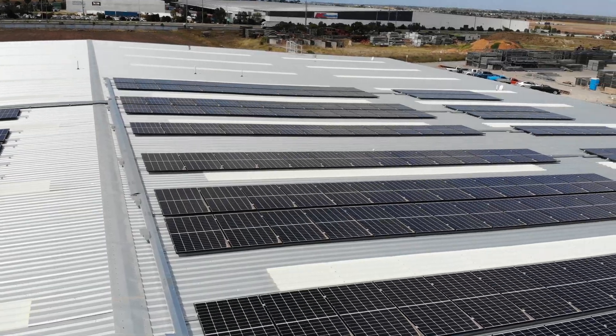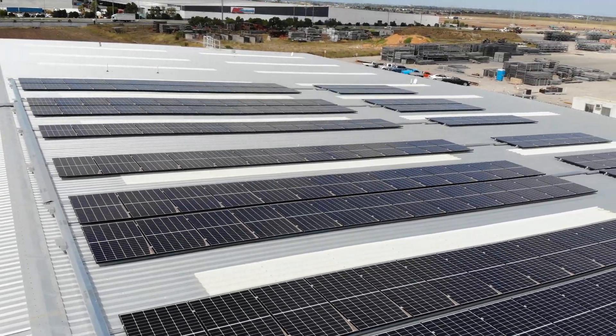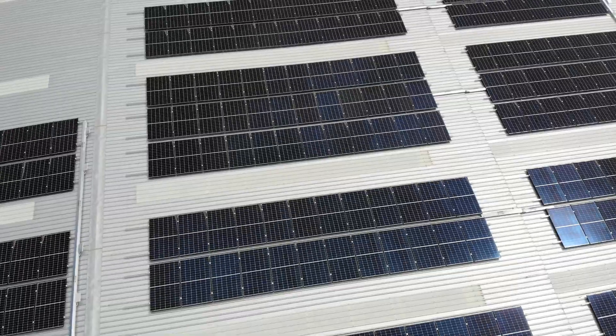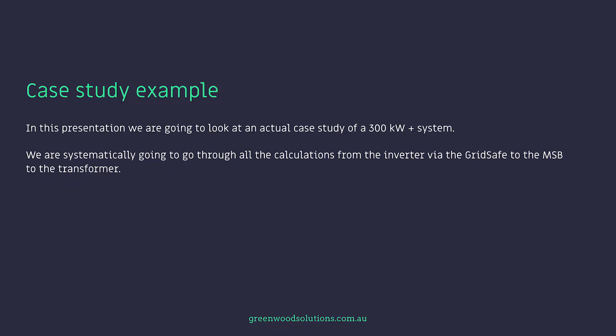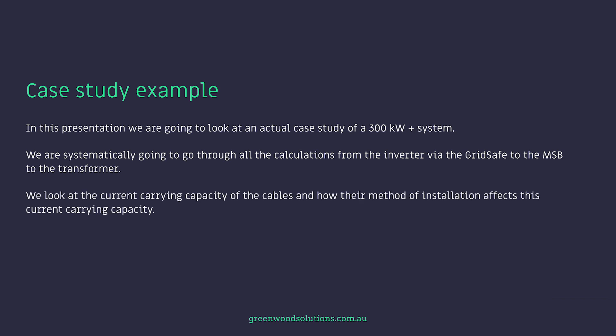In this presentation we're going to look at an actual case study of a 300 kilowatt plus system. We are systematically going to go through all the calculations from the inverter via the grid safe to the MSB to the transformer, and look at the current carrying capacity of the cables and how their method of installation affects this current carrying capacity.